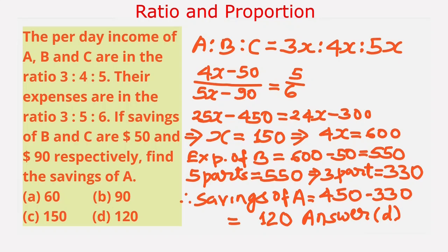Thus, from the given options, our answer is Option D, 120, which is the savings of A.